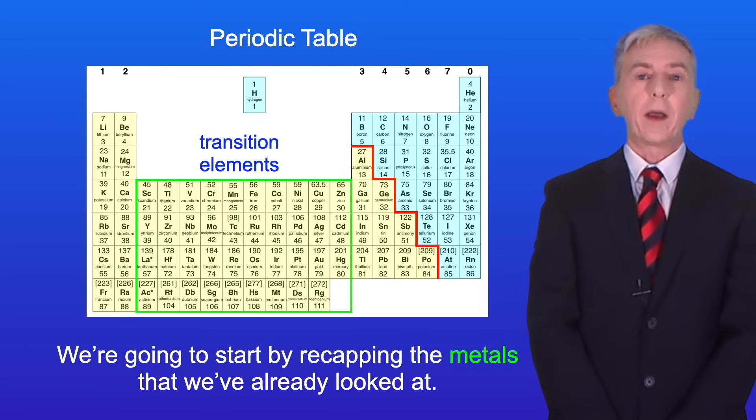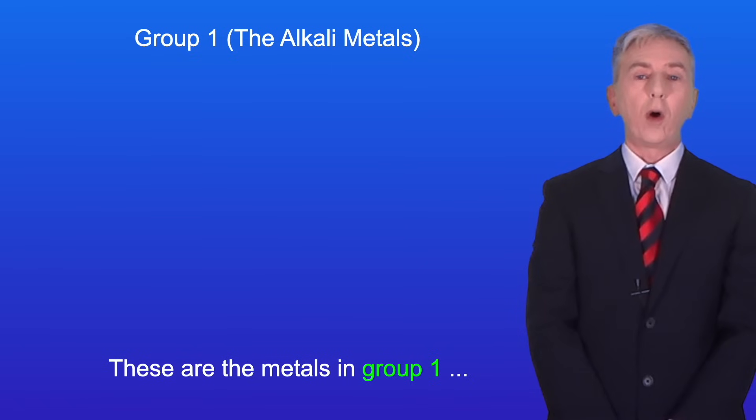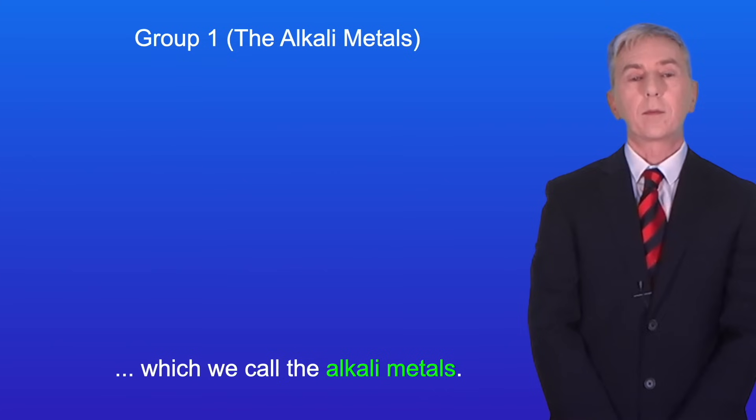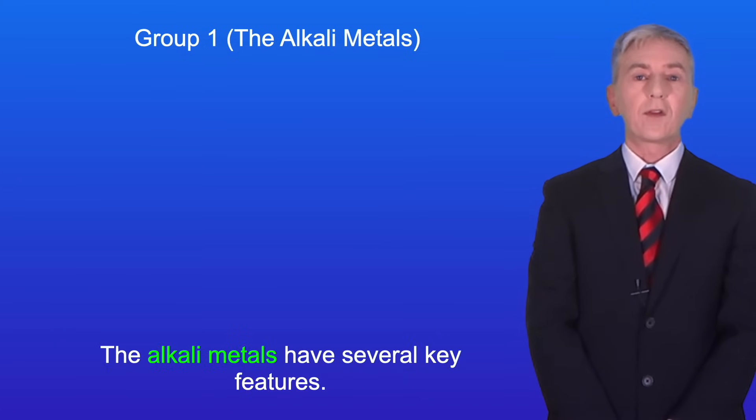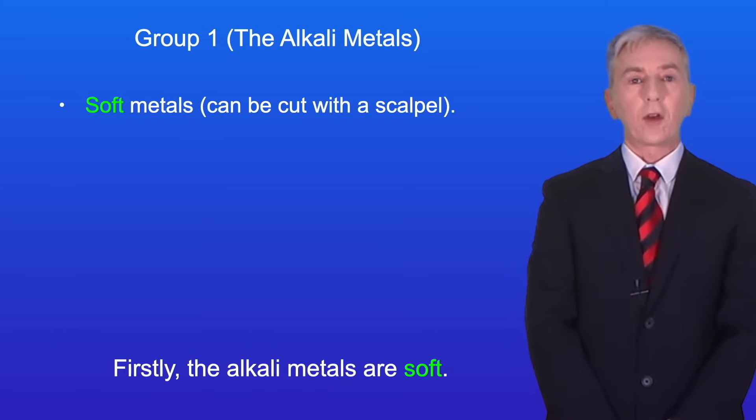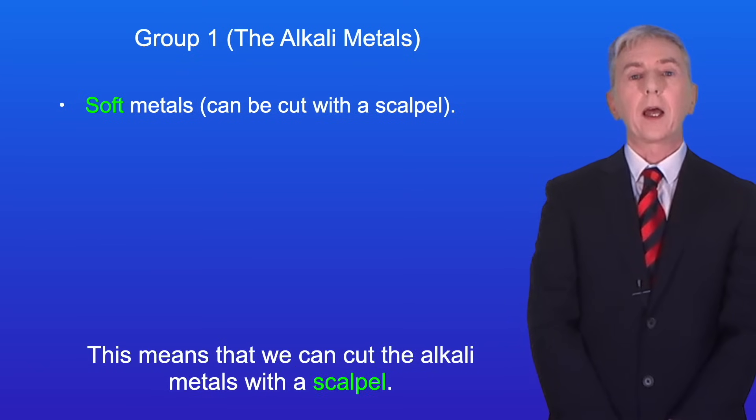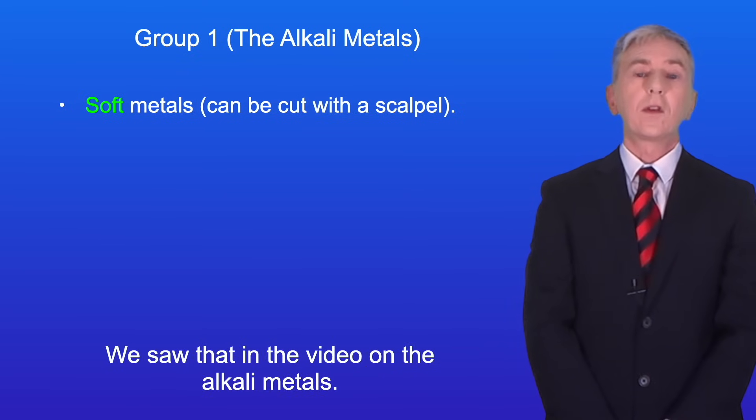We're going to start by recapping the metals that we've already looked at. These are the metals in Group 1, which we call the alkali metals. The alkali metals have several key features. Firstly, the alkali metals are soft. This means that we can cut the alkali metals with a scalpel and we saw that in the video on the alkali metals.